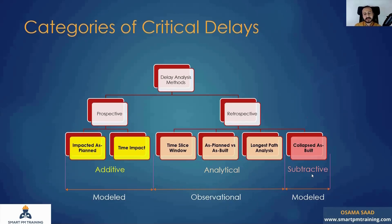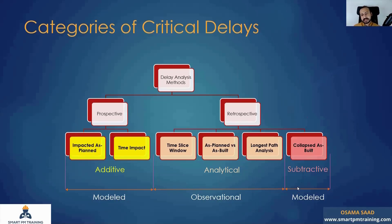For the Collapsed As-Built method, it is subtractive rather than analytical. Like the fragment approach, I deal with additional activities, but instead of adding the employer's risk events, I am deleting or removing the events caused by the employer. It is also classified as a model method because I am modeling the employer's events.